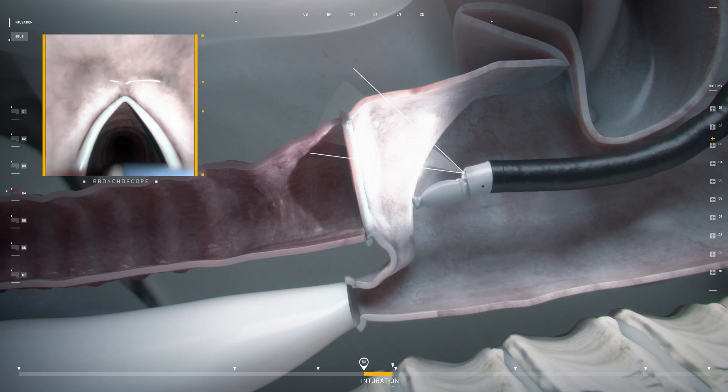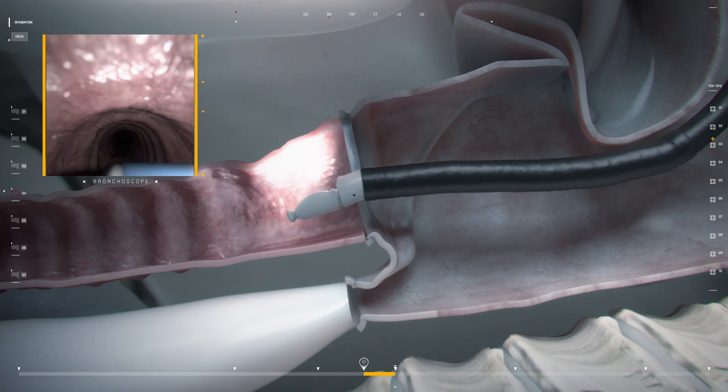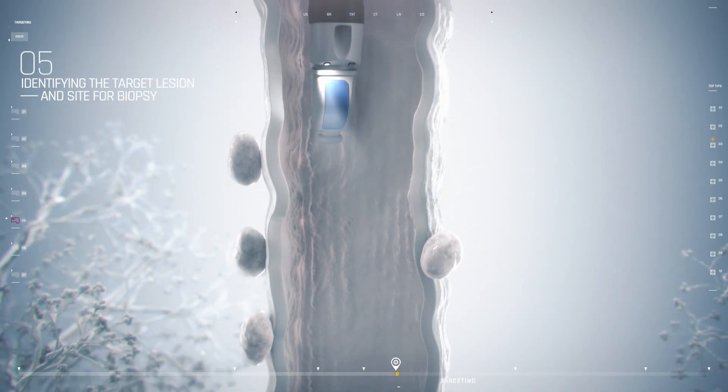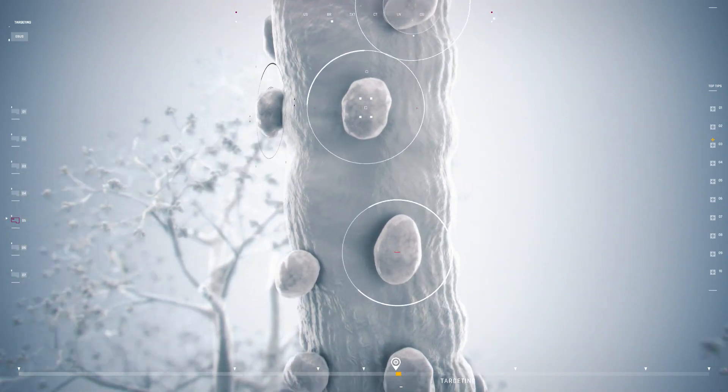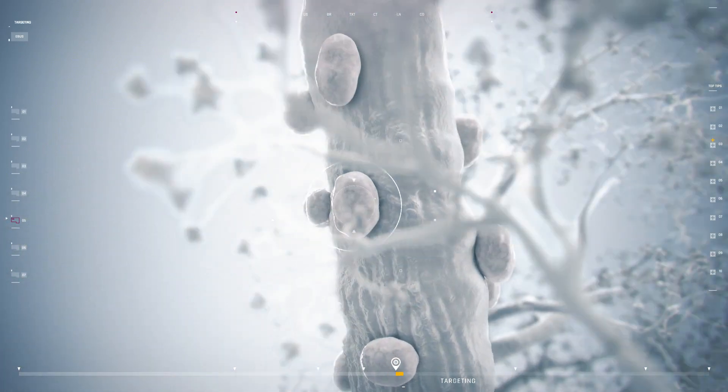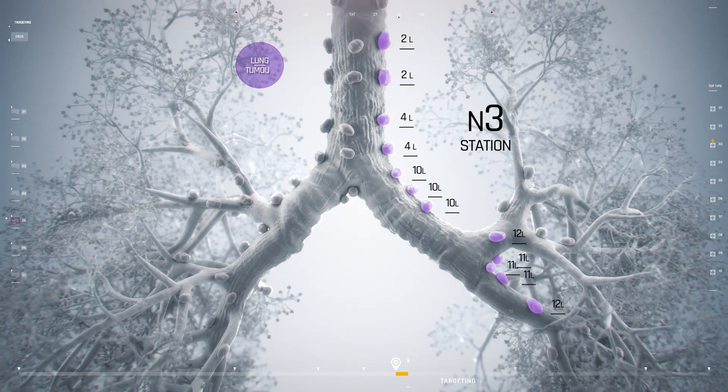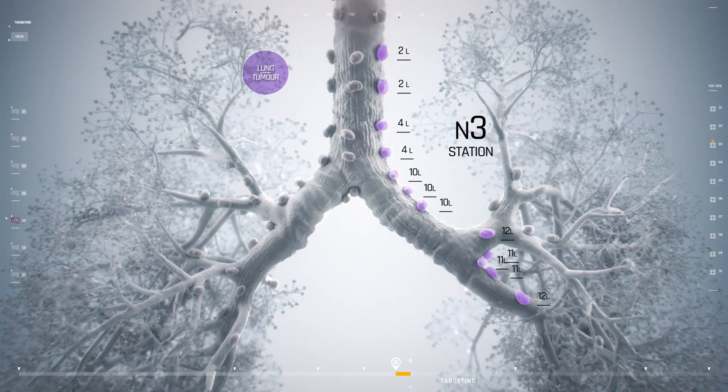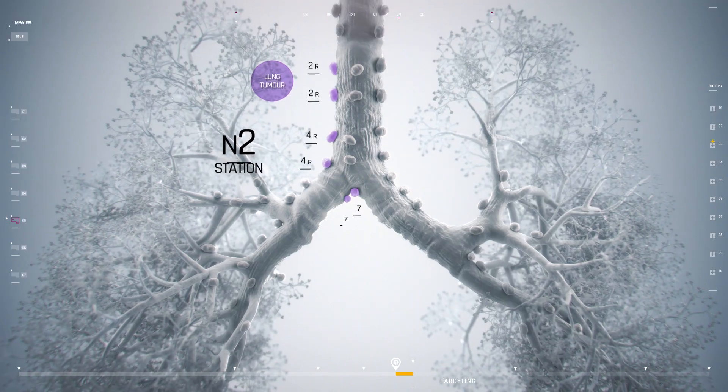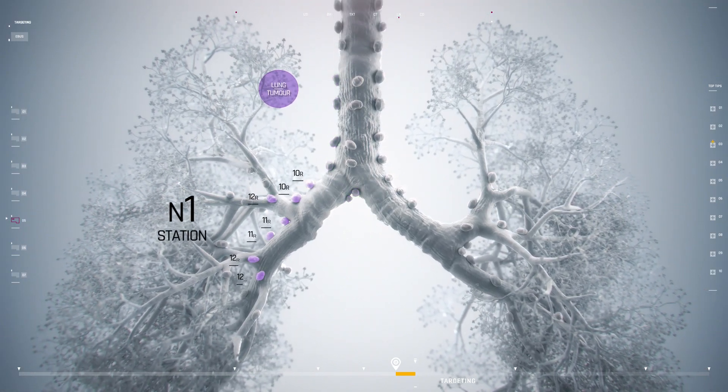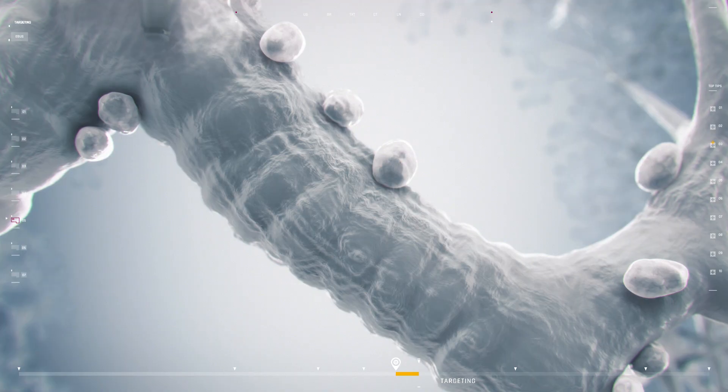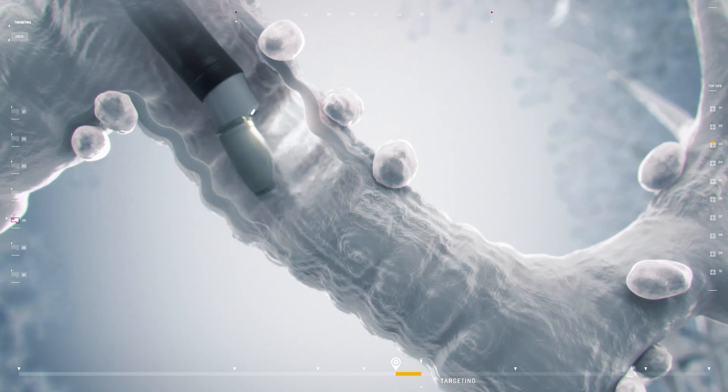Once the bronchoscope has entered the airways, the target lesion can be located. For a staging EBUS procedure, N3 lymph nodes contralateral to the primary tumor should be examined first, followed by N2 nodes and finally N1 nodes to prevent upstaging the disease.